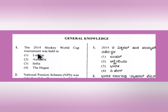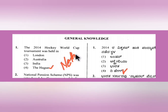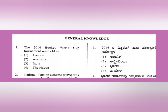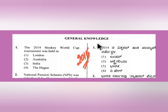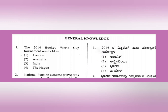Question 1: The 2014 Hockey World Cup tournament was held in The Hague, Netherlands. The winner was Australia and the runner-up was Netherlands itself. Since this exam was held in 2015, they asked questions related to 2014. For upcoming exams in 2022-2023, you need to prepare current events. There will definitely be a question related to sports.